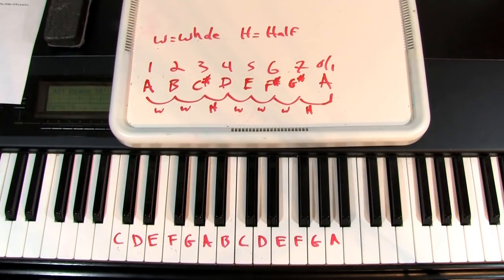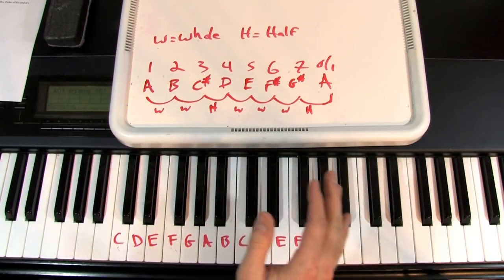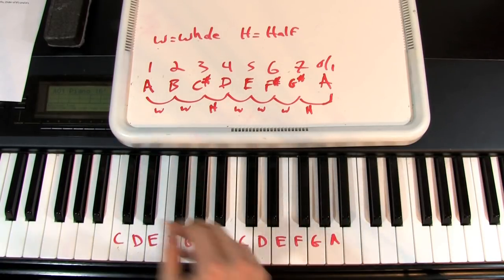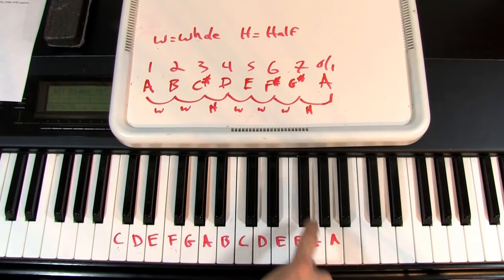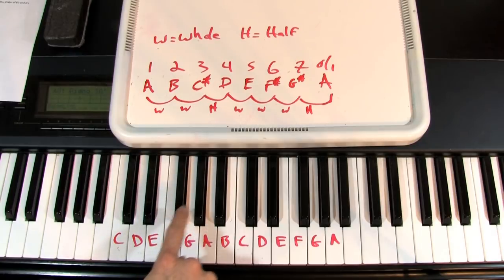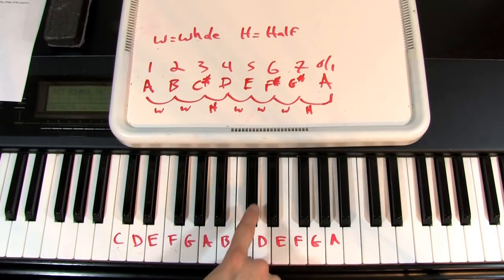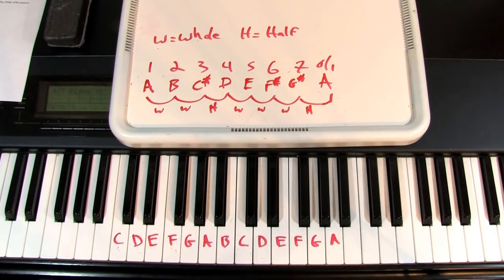This formula can be applied in many different ways. Every single key — you can start on G and go whole, whole, half, whole, whole, whole, half. You can start on E and do the same. All of these work the same way.